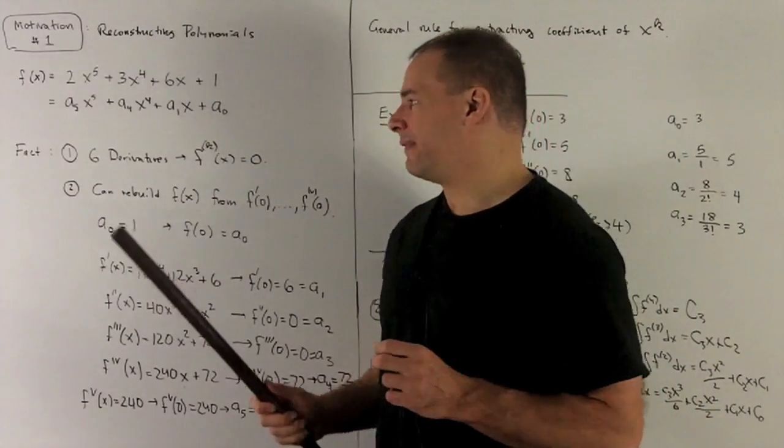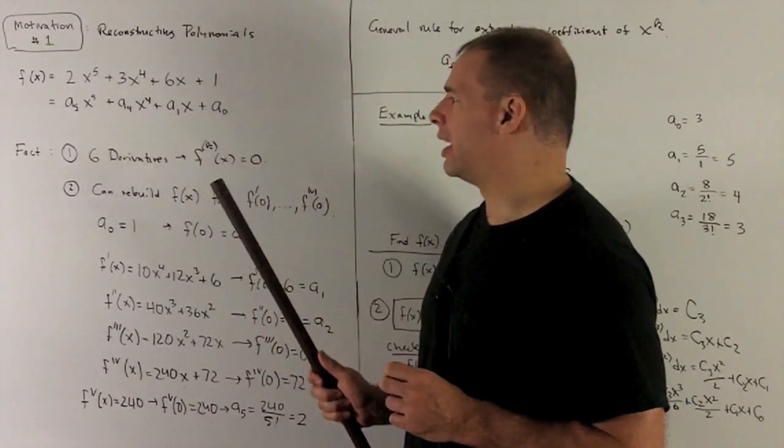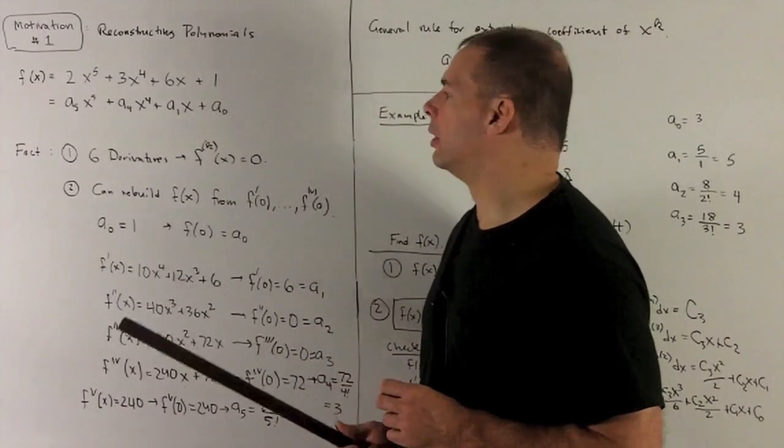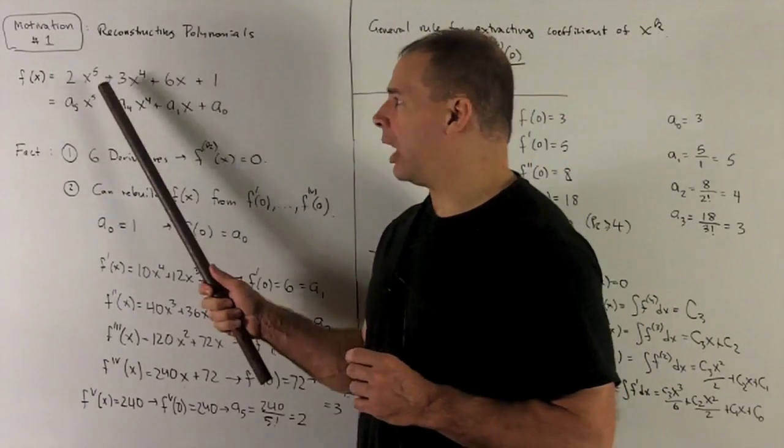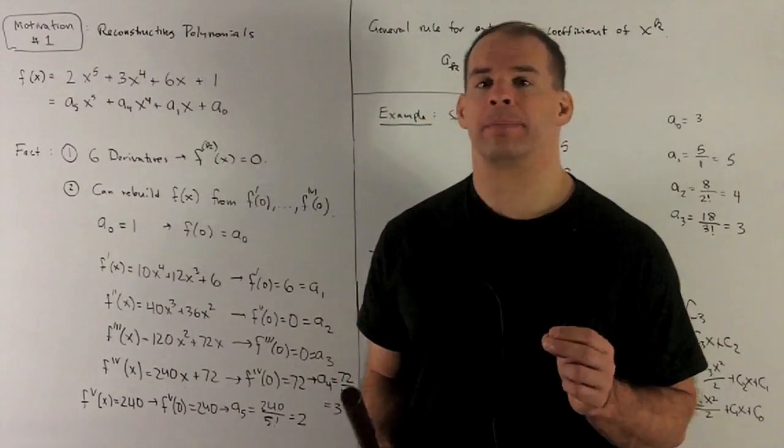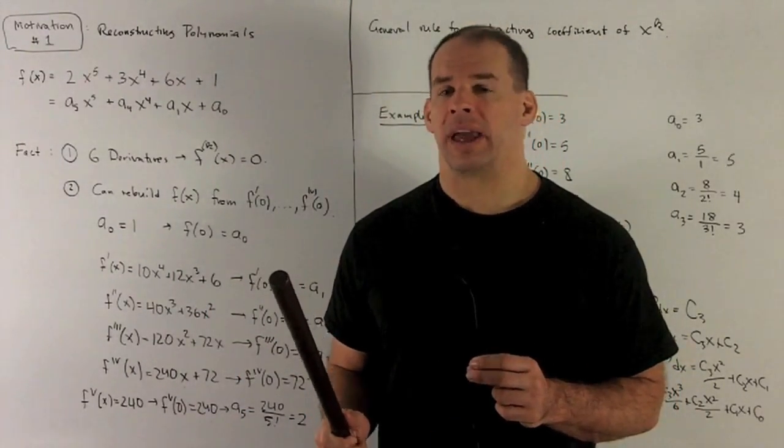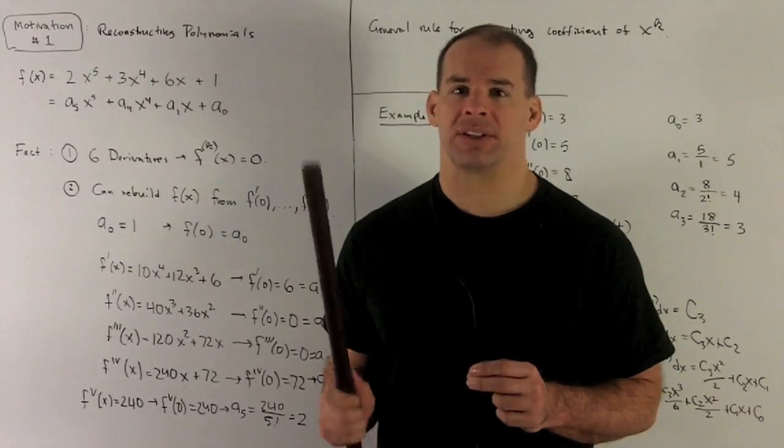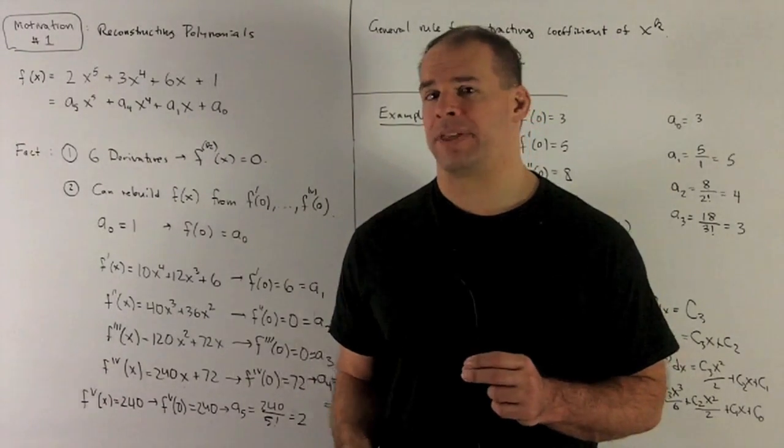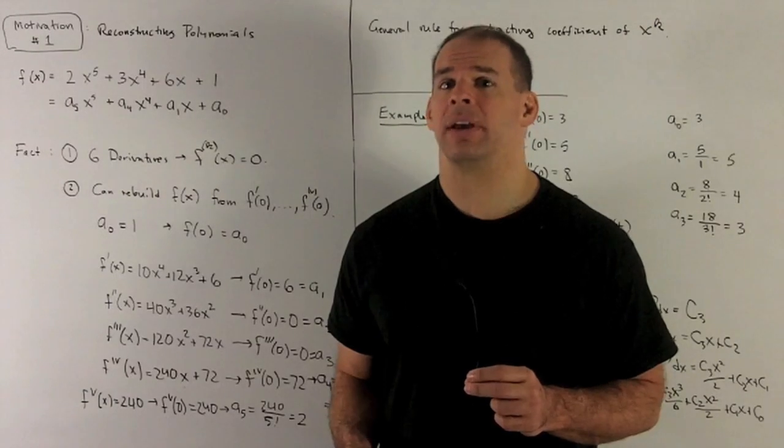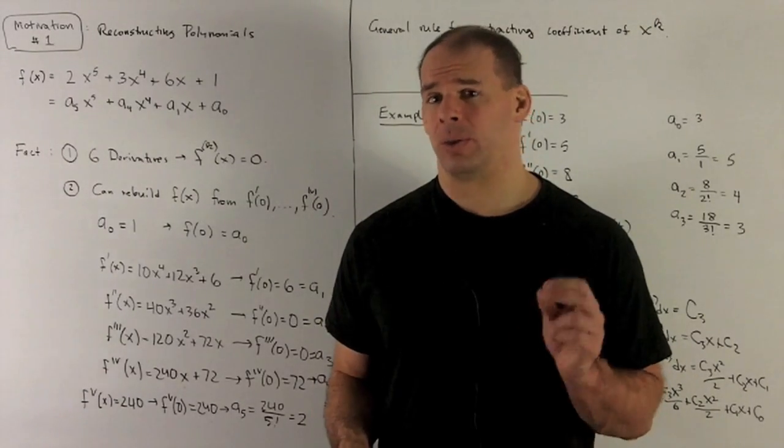First thing we note: if I take six derivatives of this, it's going to get driven down to 0. Why is that? What's the rule for taking the derivative of, say, x^5? You drop your exponent, and then you subtract 1 off of it. I can only do that five times and get something that's not 0. On the 5th time, what comes out is going to be a constant. So when I hit it with 6 or higher, we go to 0.